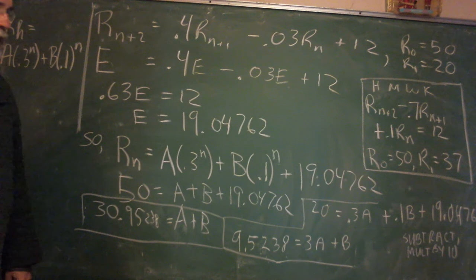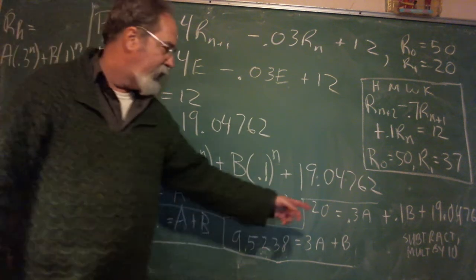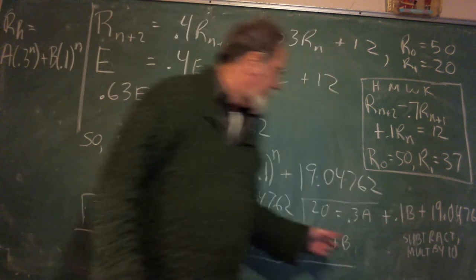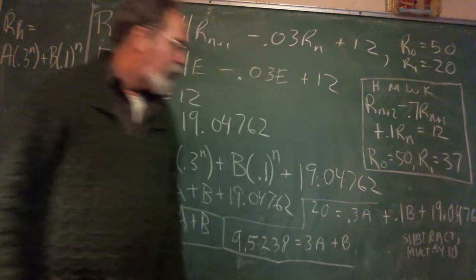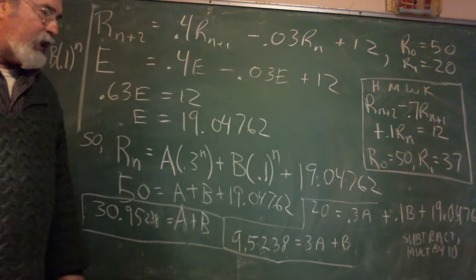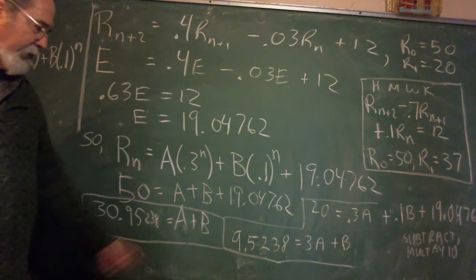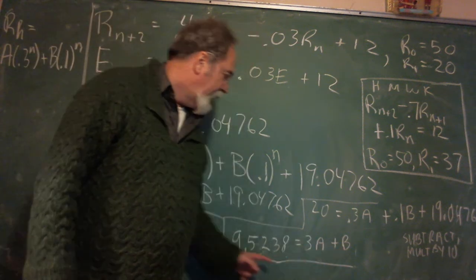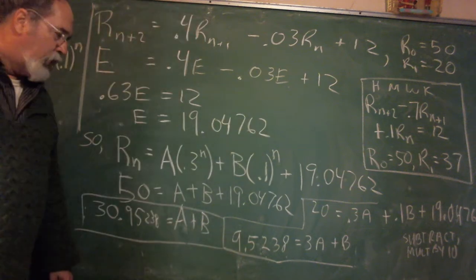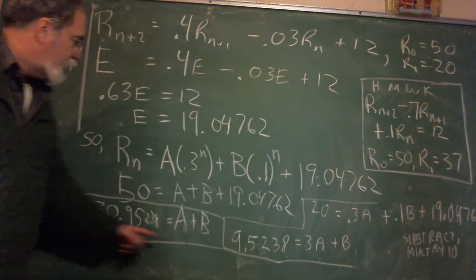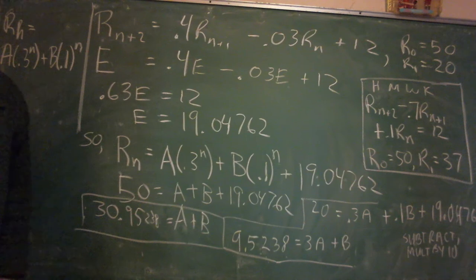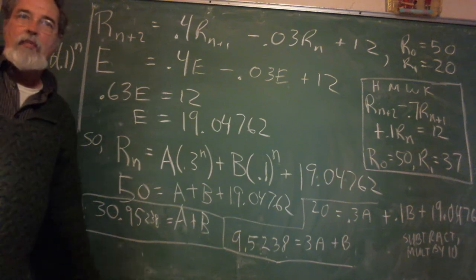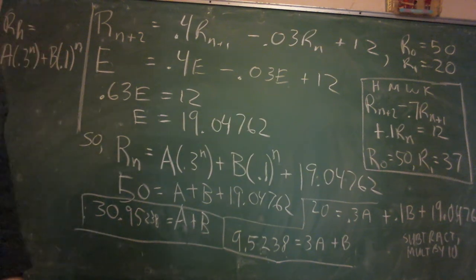So you've got to do a 0.3 because now N is 1, a 0.3 times A, a 0.1 times B. So you see them over there, plus the 19, you know, the fixed number. So what I did was I subtracted the 19-point blah blah blah from the 20. So I get a really small number, 0.9 something. And that's equal to 0.3A plus 0.1B. I multiplied by 10. Because then I get a whole number, 3A plus a 1B, and it equals 9.5238. Now I've got to take these two equations and solve for A and B. But they're going to be pretty numbers, but it's just solving two equations with two unknown.